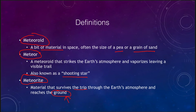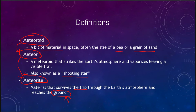Finally, we have a meteorite. A meteorite is material that survives the trip through the Earth's atmosphere and lands on the ground, so it can actually be studied. This means most meteoroids never become meteors — most just float out in space. A small percentage will become meteors and give us a shooting star, and an even smaller percentage will actually make it down to the Earth's surface and become meteorites.